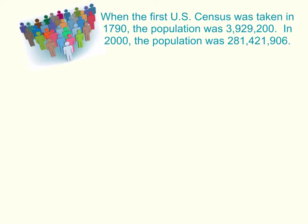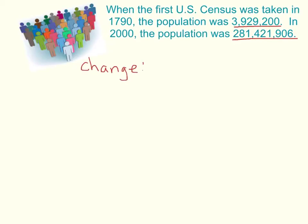When the first US census was taken in the year 1790, the population was 3,929,200. In the year 2000, the population was 281,421,906. We want to find the percent of change and round to the nearest whole percent. We first need to find the change — how much did it change? So we subtract the original 1790 population from the new 2000 population.